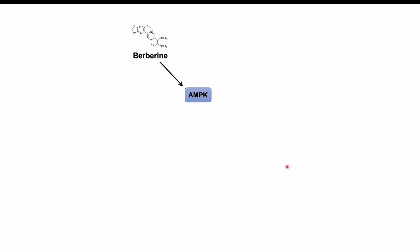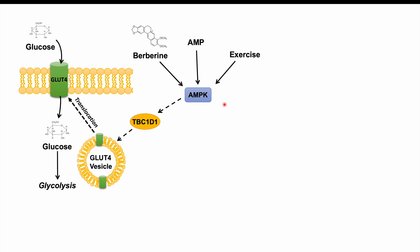Berberine actually operates through a completely different mechanism. It activates a particular protein known as AMPK, or AMP-activated protein kinase. This protein is typically activated by AMP, which signals that the cell has low energy stores — something seen in fasting states and during exercise. When AMPK is activated, one of its effects includes activating a protein known as TBC1D1, which leads to the translocation of glucose transporter 4, or GLUT4, channels into the cell membrane, allowing glucose to be taken up into the cell. This is an insulin-independent mechanism.